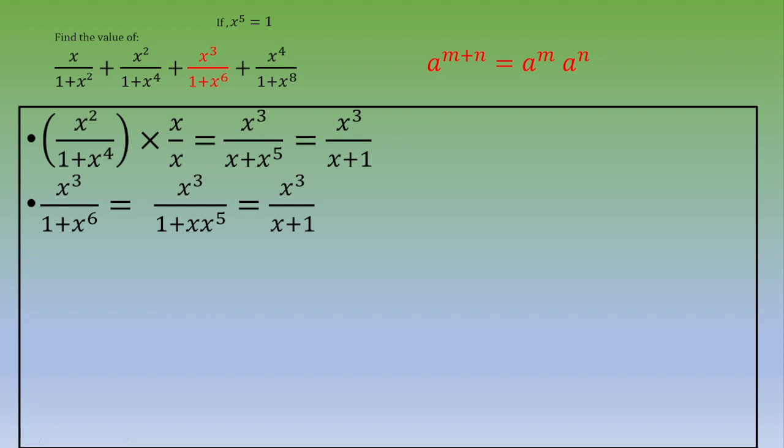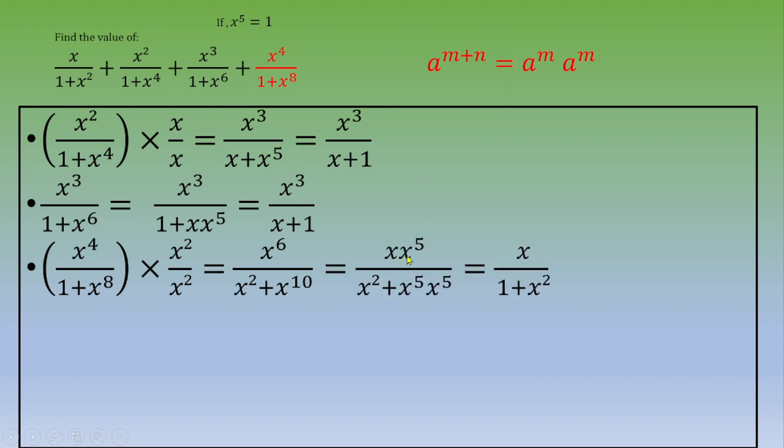Let's talk now about term number four. This is exactly the same process. We would like to end up with x power 5. So the idea is to multiply and divide by the same quantity, x cubed. So this is x power 6 over x squared plus x power 10. We can apply this rule and end up with x times x power 5 over x squared plus x power 5 times x power 5, which is x over 1 plus x squared.